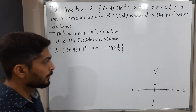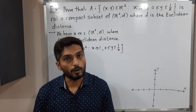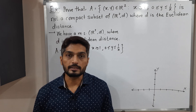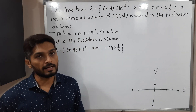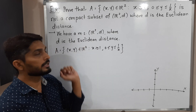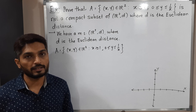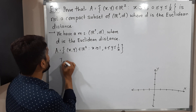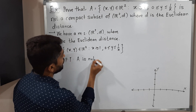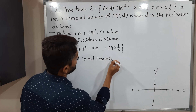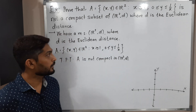In this video we are going to discuss set A and prove that it is not a compact subset of R²(D), where D is the Euclidean distance. The metric space R²(D) with Euclidean distance is given, along with the definition of the set. We need to prove that A is not compact in R²(D).